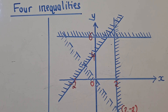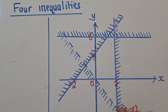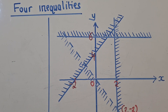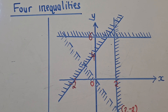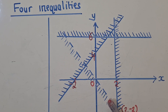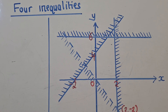Hi everybody, welcome to this platform. This is C-Chamber Jacob. So we've got this question where we need to write the four inequalities. To write the inequalities, we first need to identify inequalities which do not require gradient. There is no gradient for this one, and even this one doesn't have a gradient. The inequalities with slope are only two — this one has got a gradient, and this one has got a gradient because it's a slope. Gradient is the same as slope.